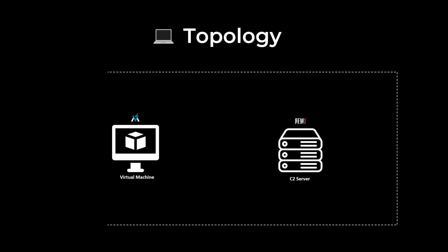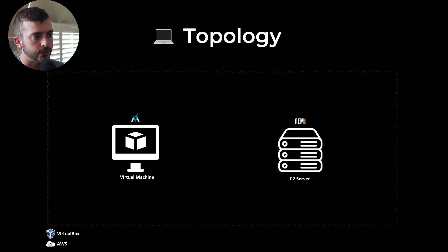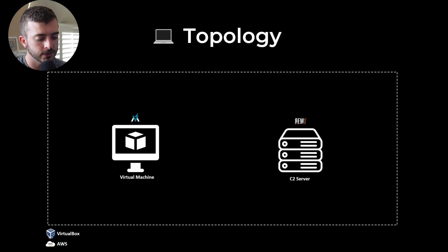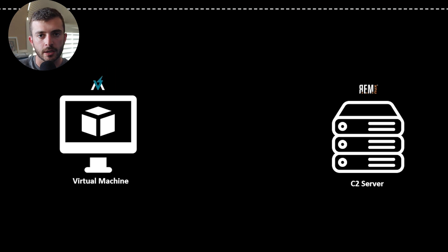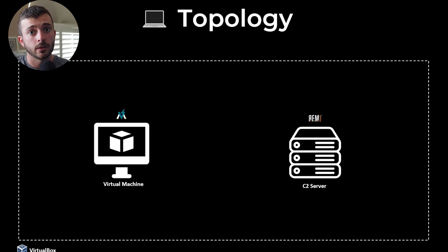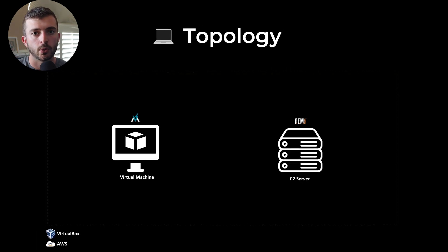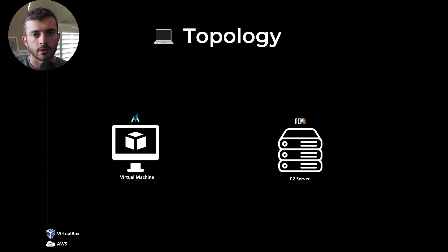Let's take a look at the topology we're going to be building. We'll have an isolated virtual machine environment — one running FlareVM, the other running Remnux. Within the FlareVM virtual machine, we're going to download and detonate the malware. Remnux will run in the background as the C2 host in an isolated environment. I'll be showing how to do this both in VirtualBox as well as in AWS using EC2 instances and Terraform for infrastructure-as-code, so we can launch and destroy our lab environment very quickly.